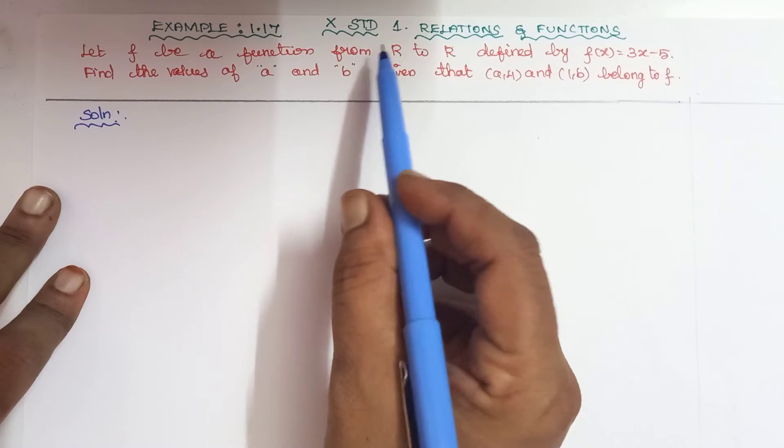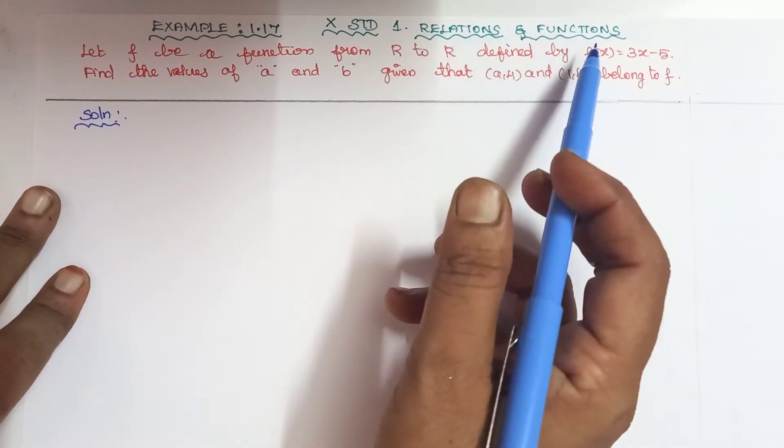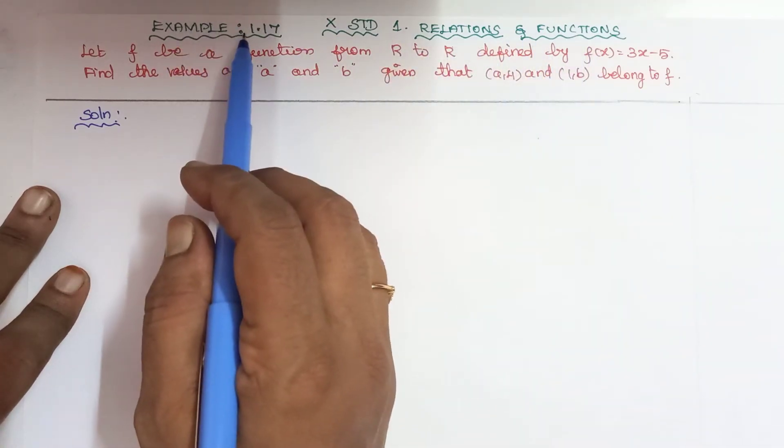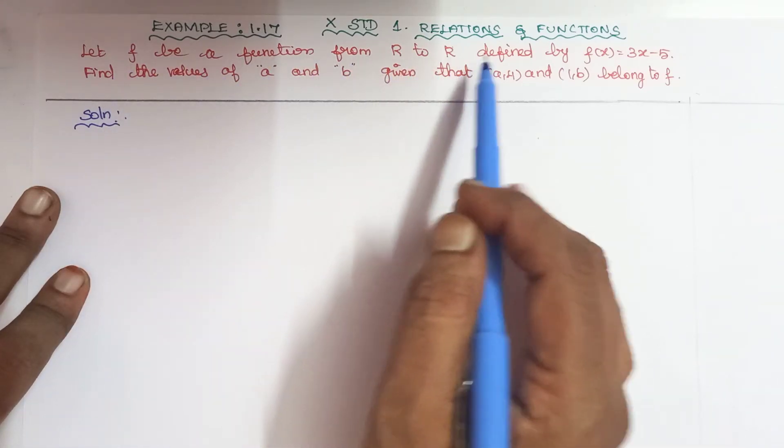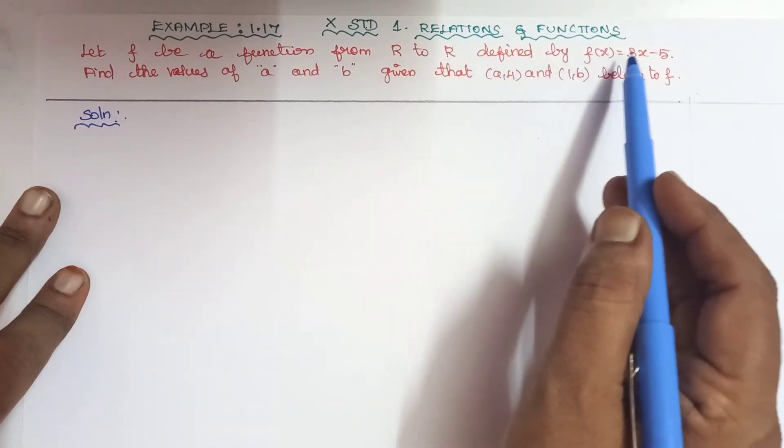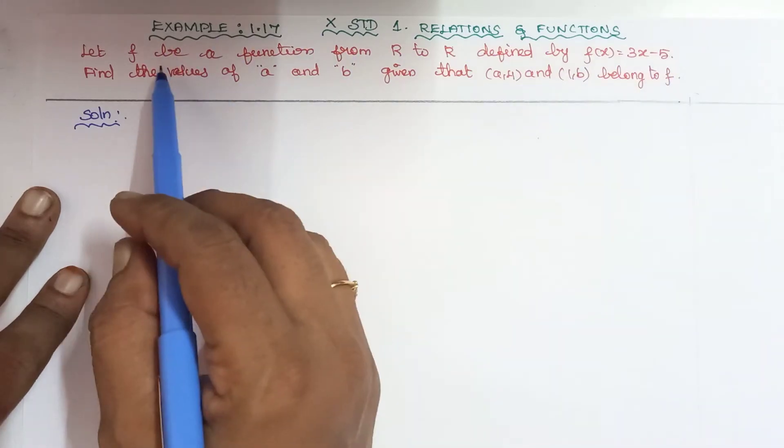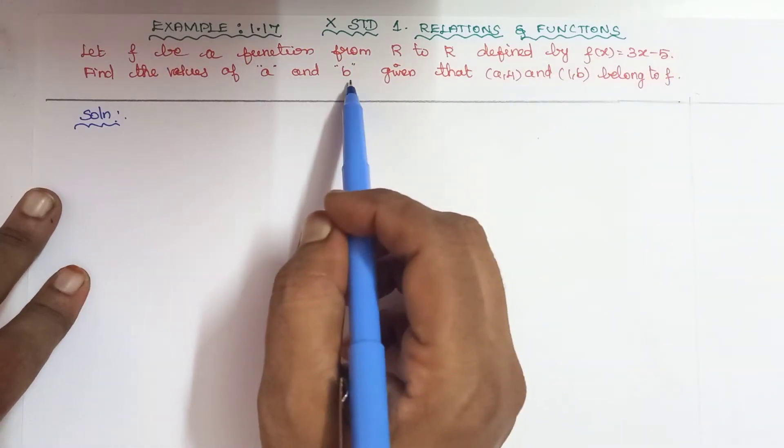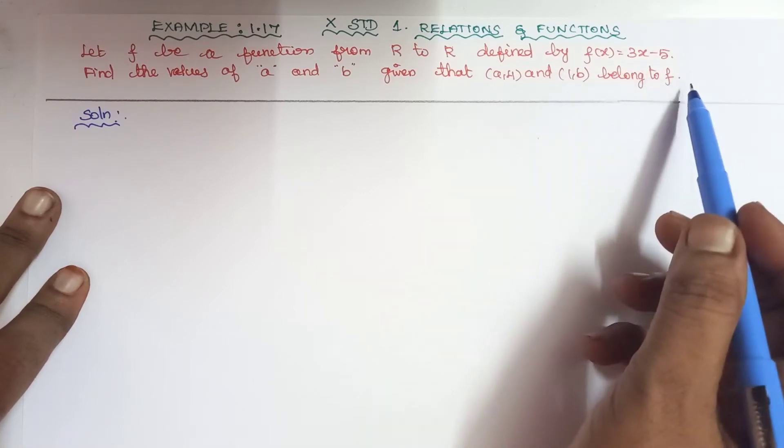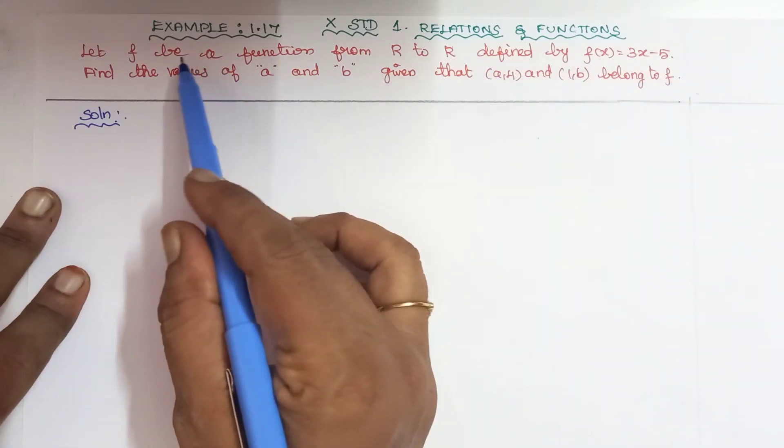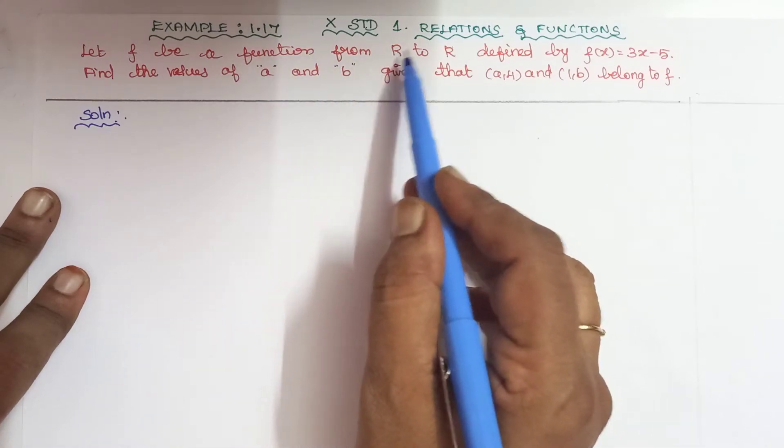Good morning to everyone. 10th standard, first chapter: relations and functions, example 1.17. Let f be a function from R to R defined by f(x) = 3x - 5. Find the values of a and b given that (a, 4) and (1, b) belong to f.